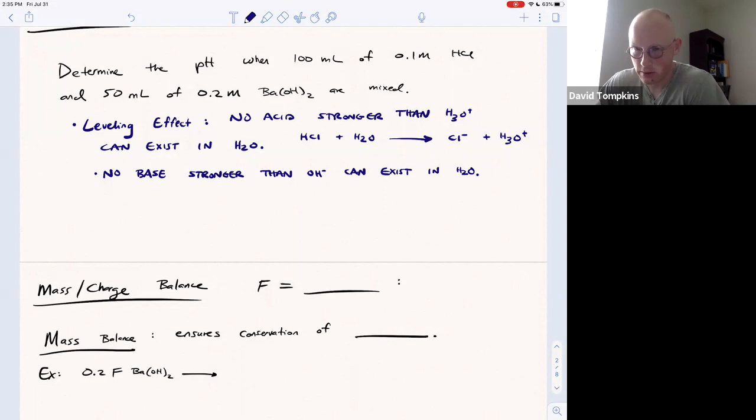Otherwise that super strong base would just deprotonate the water molecule - water's in excess and generate hydroxide. So we represent this dissociation of a strong base like barium hydroxide forming barium two plus and two hydroxide ions. There's a molecular formula unit two here for every one barium atom.